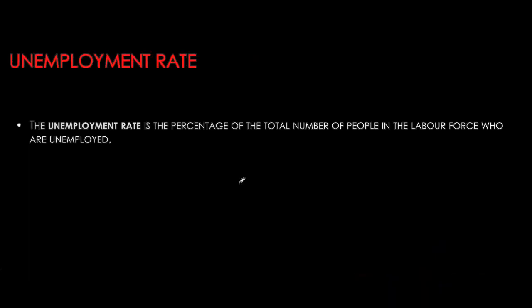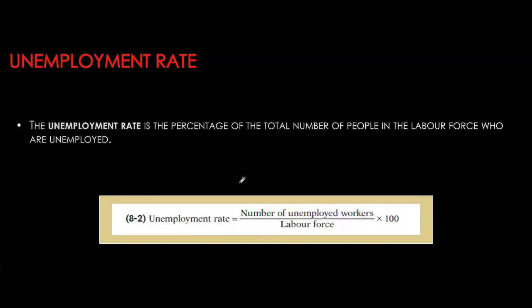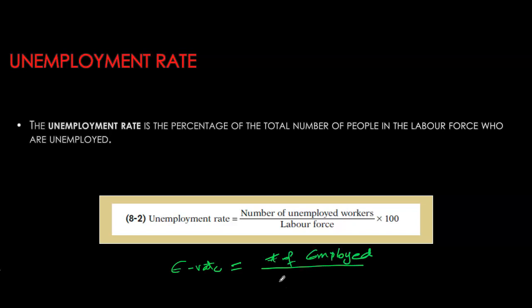The unemployment rate is the percentage of the labor force that is unemployed, calculated as the number of unemployed divided by the labor force, times 100. Note that the employment rate is not a percentage of the labor force — it is the percentage of your working age population. So the formula for employment rate is: number of employed divided by your working age population.